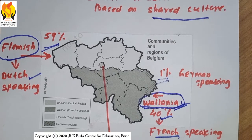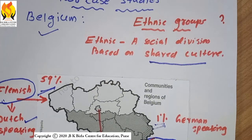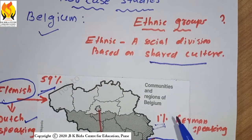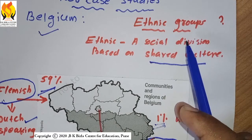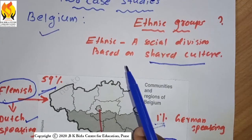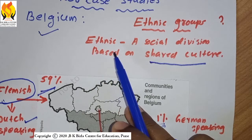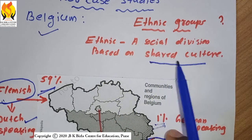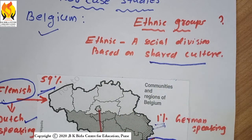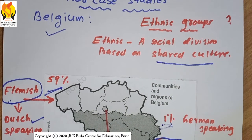From this we can understand that people in Belgium belong to different ethnic groups. An ethnic group is a social division based on shared culture — it means people staying in one particular region may have a common culture.